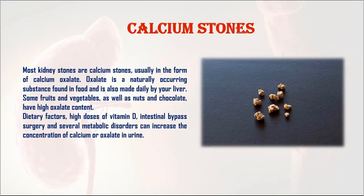1. Calcium stones. Most kidney stones are calcium stones, usually in the form of calcium oxalate. Oxalate is a naturally occurring substance found in food and is also made daily by your liver. Some fruits and vegetables, as well as nuts and chocolate, have high oxalate content. Dietary factors, high doses of vitamin D, and intestinal bypass surgery can increase the concentration of calcium or oxalate in urine.